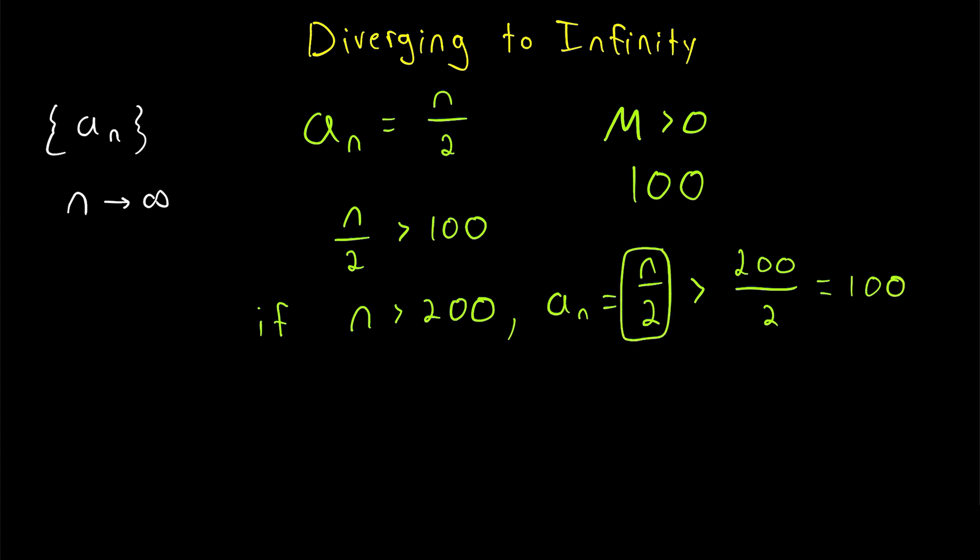Thus, the values of the sequence will be greater than 100, whenever n is greater than 200. So the point is,